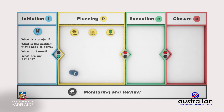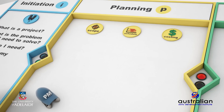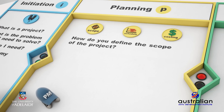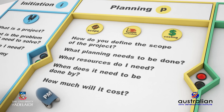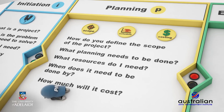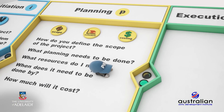Key questions are: how do you define the scope of your project? What planning needs to be done? What resources do I need? When does it need to be done by? And finally, how much will it cost? If your planning has been thorough, you can proceed through the stage gate into the execution phase.